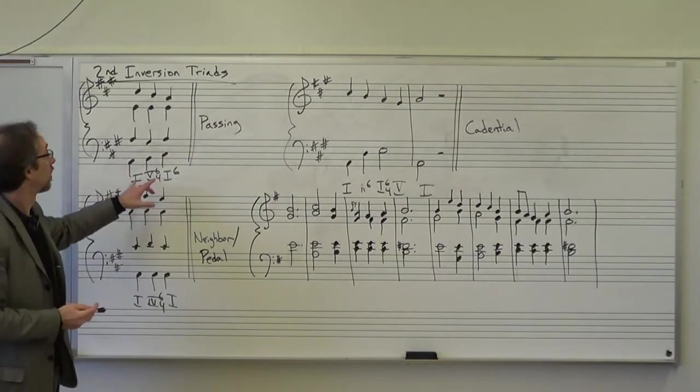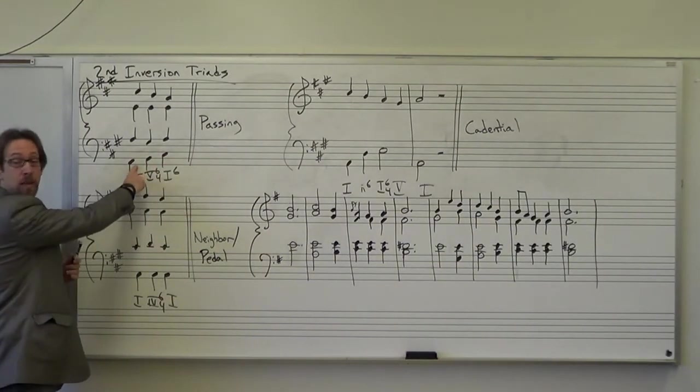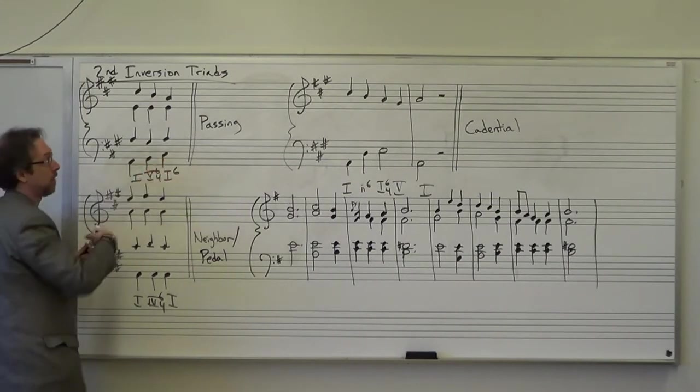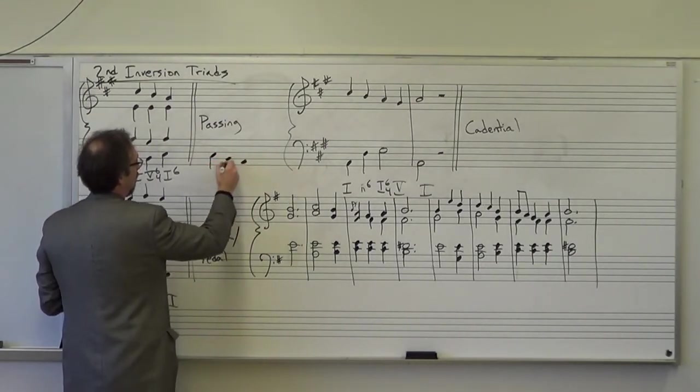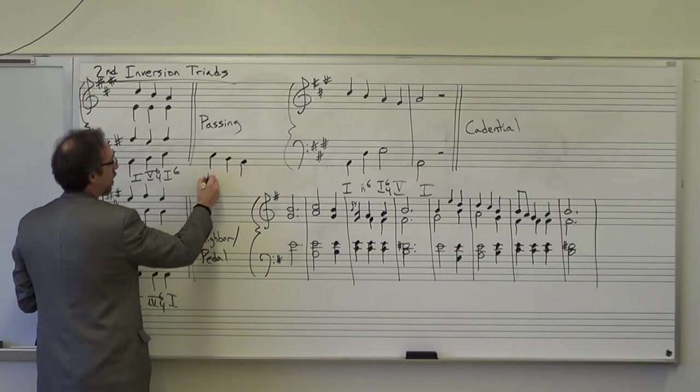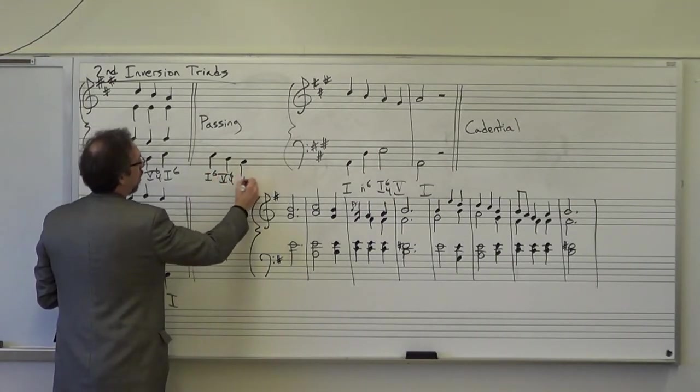So let's review. A passing 6-4 must have in the bass a scale, either going up, as in this example, or you could do the opposite. You could go like this, have the scale go that way, where you have a 1-6, 5-6-4, 1 chord.